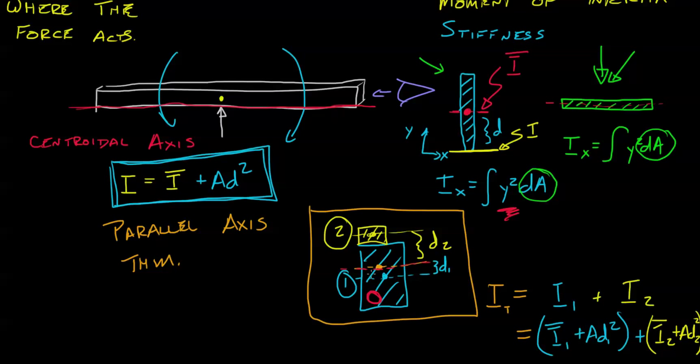We use the second moment to say, okay, how stiff is it? How much does it want to resist bending about that axis? I hope this gives you a little bit more insight and we'll cover more in the second moment in our next module.